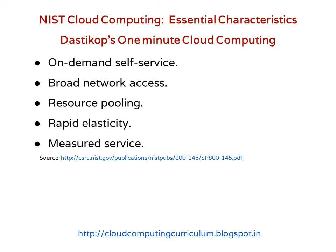Broad network access means the service is available on multiple devices connected through different networks — for example, a computer network or a mobile network. Resource pooling means that in order to meet the demands of multiple users, cloud computing service providers join together resources from different locations.